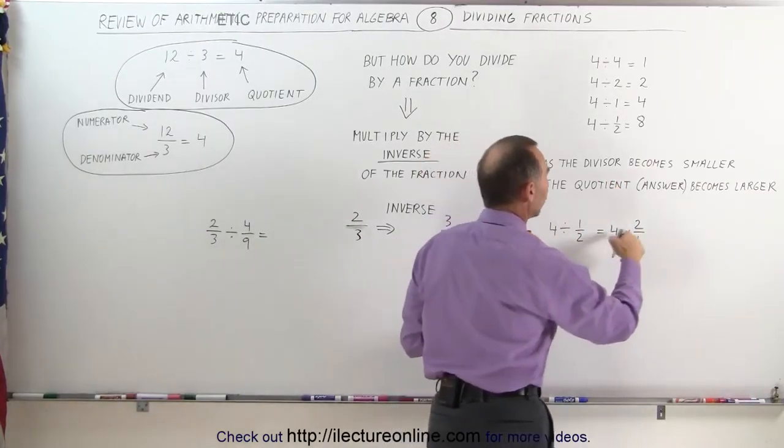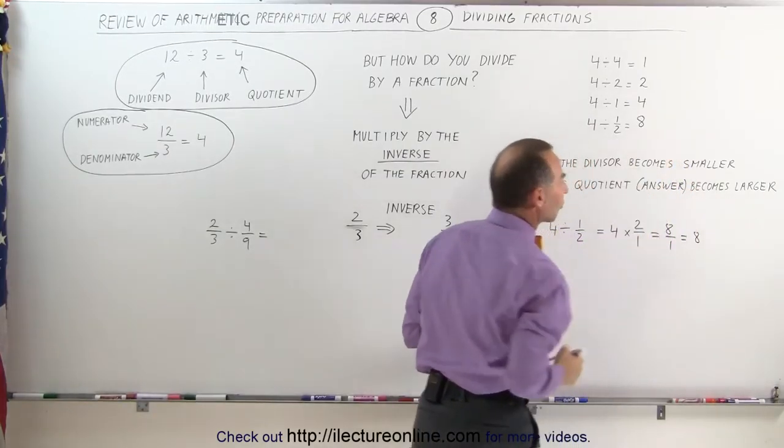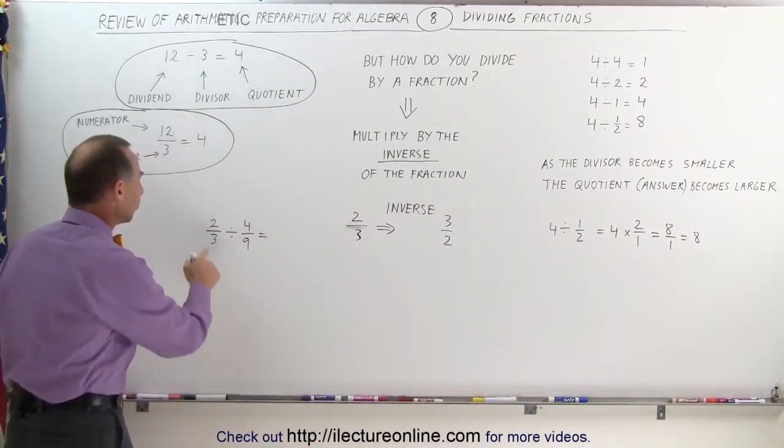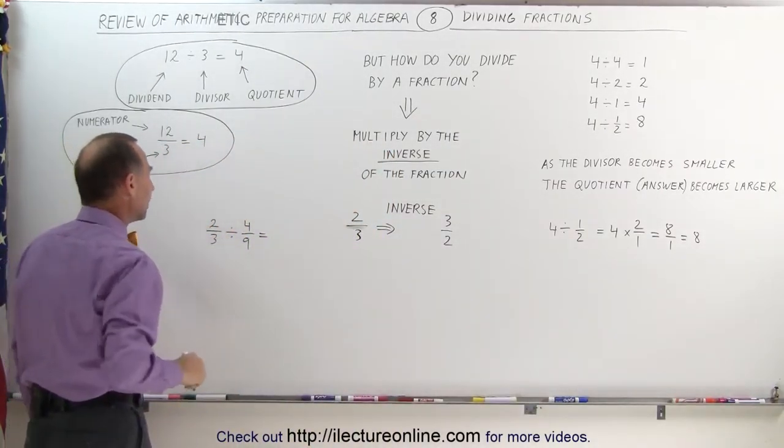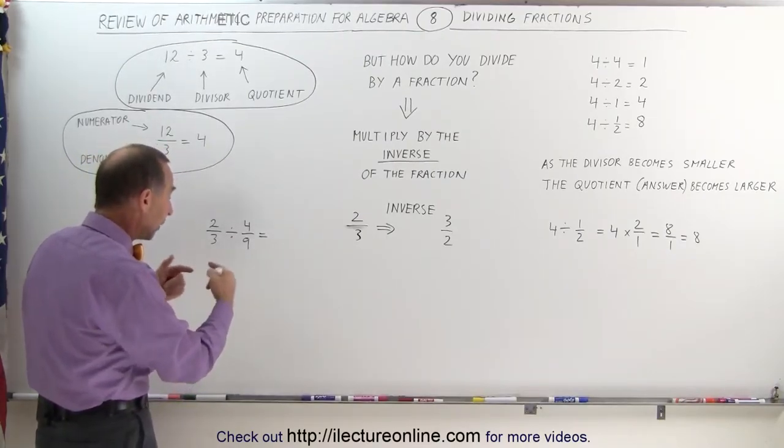Which means, if I now divide the number 4 by 1 half, that's the same as multiplying by the inverse. I'm going to take 4 and multiply times the inverse of the fraction, which is now 2 divided by 1. Well, 4 times 2 gives me 8, divided by 1, which is simply 8, and that's where the answer came from.